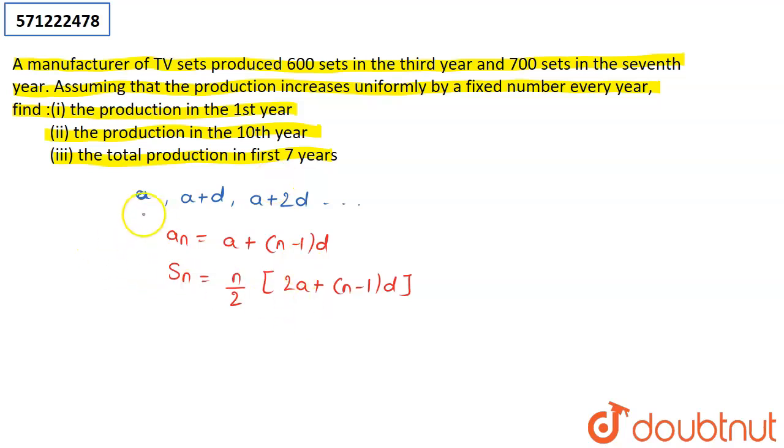Now, if I assume that the production in the first year was A, then I am given that the production in the third year was 600 sets. So, I am going to use this formula. For the third year, it will become A + (3-1)D, that is A + 2D = 600 sets. Let us mark this as equation 1.